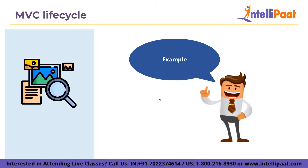Consider a restaurant example. The waiter takes your order, goes to the kitchen, and informs the chef. The chef gets the ingredients for your meal from the refrigerator. When the food is ready, the waiter returns to the kitchen and brings it to you. In this example, you serve as the view, the waiter serves as the controller, the chef serves as the model, and the fridge serves as the data. You, as the view, cannot communicate directly with the chef, who is the model.